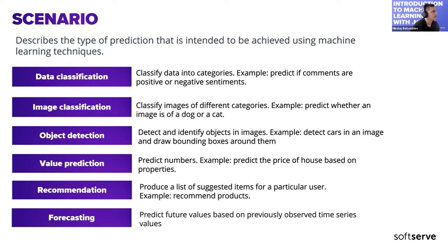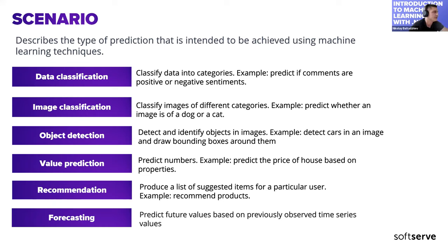When building a model with ML.NET, we first need to choose a scenario — the scenario describes the type of prediction we intend to achieve. The main scenarios available in the model builder are: data classification, used to classify data into categories (for example, predicting if comments are positive or negative sentiment); image classification, used to classify images into different categories (for example, predicting whether an image is of a dog or a cat).